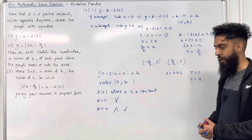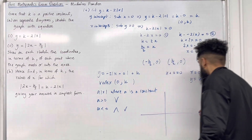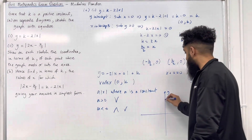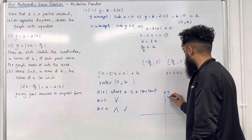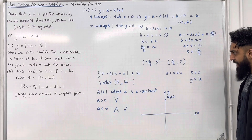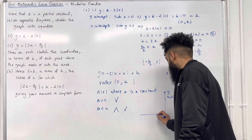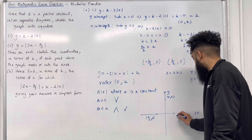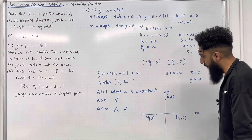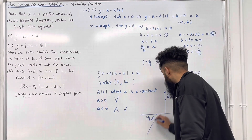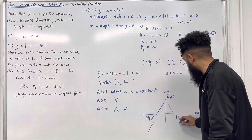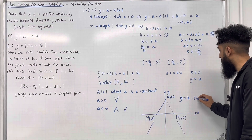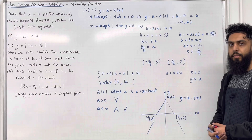Now I'm going to sketch the graph. On the coordinate grid, the y-intercept and vertex is at (0, k). The x-intercepts are at (−k/2, 0) and (k/2, 0). With the upside-down V-shape, the sketch of y = k − 2|x| is complete. This completes part 1 of part A.